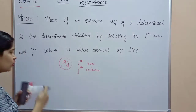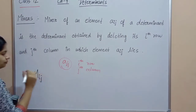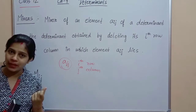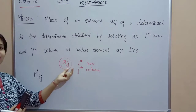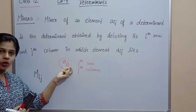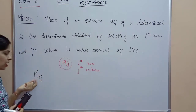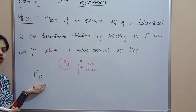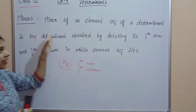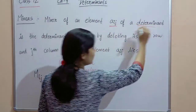So how do we find a Minor? We remove the Minor by deleting the i-th row and j-th column in which the element Aij lies, and then we take the determinant of the remaining elements.